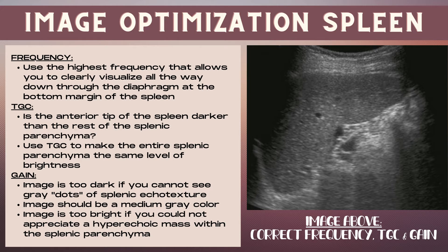Now let's talk about image optimization for the spleen. For frequency, use the highest frequency that allows you to clearly penetrate and visualize all the way down through the diaphragm at the bottom margin of the spleen. For TGC, ask yourself: is the anterior tip or portion of the spleen darker than the rest of the splenic parenchyma? Use TGC to make the entire splenic parenchyma the same level of brightness throughout.